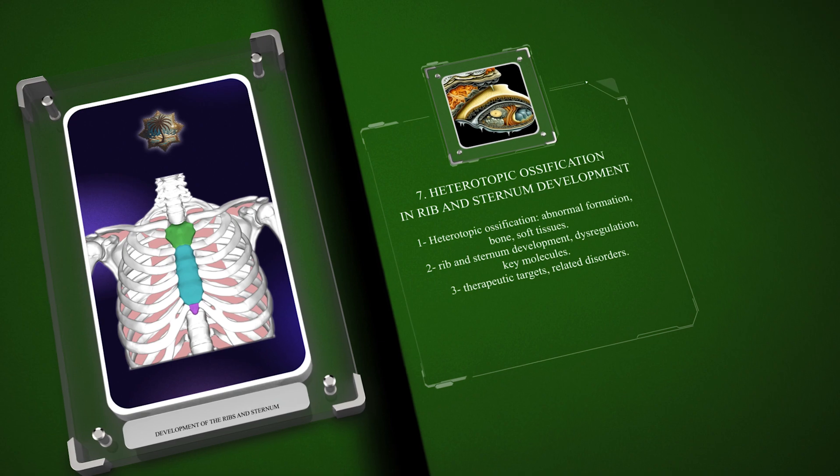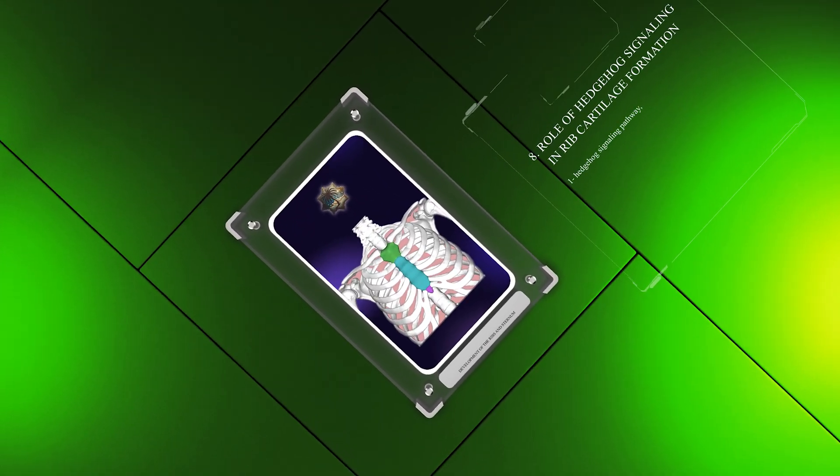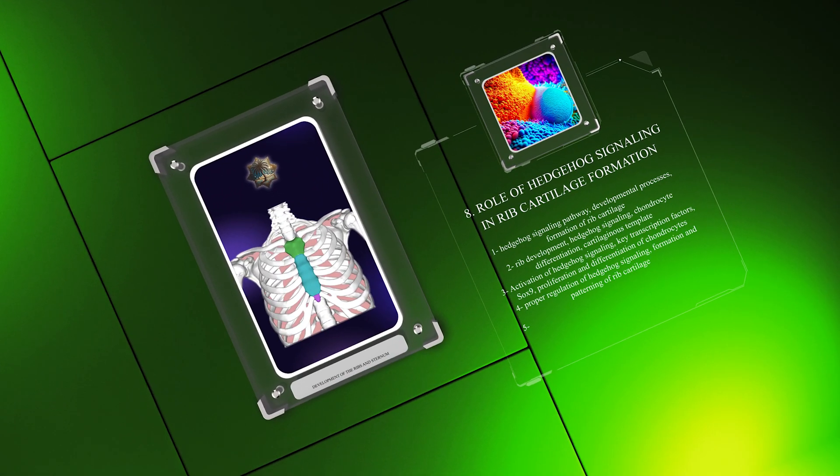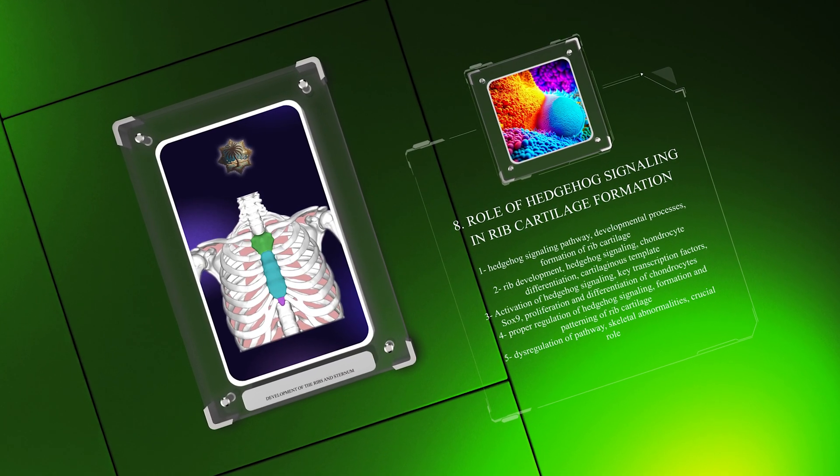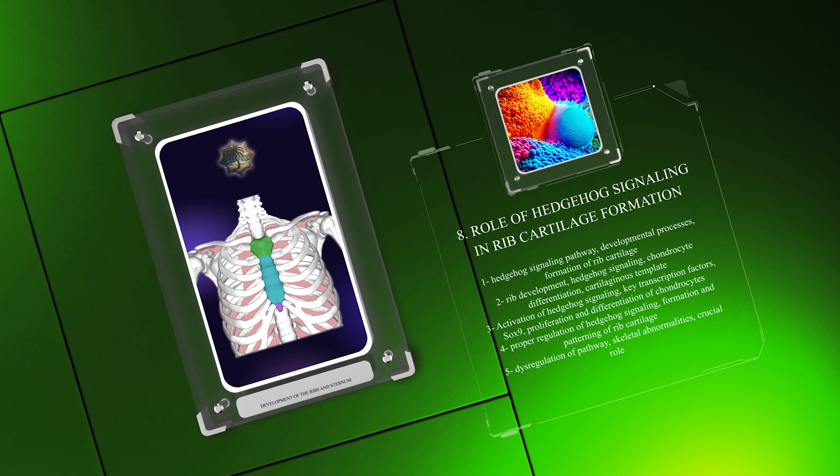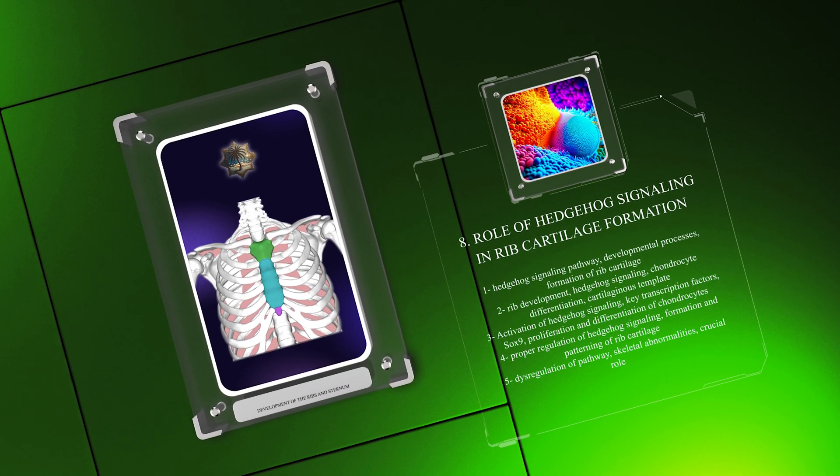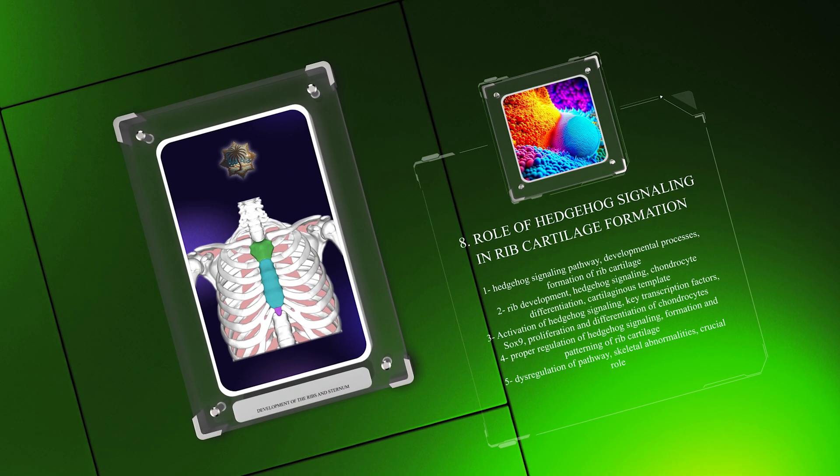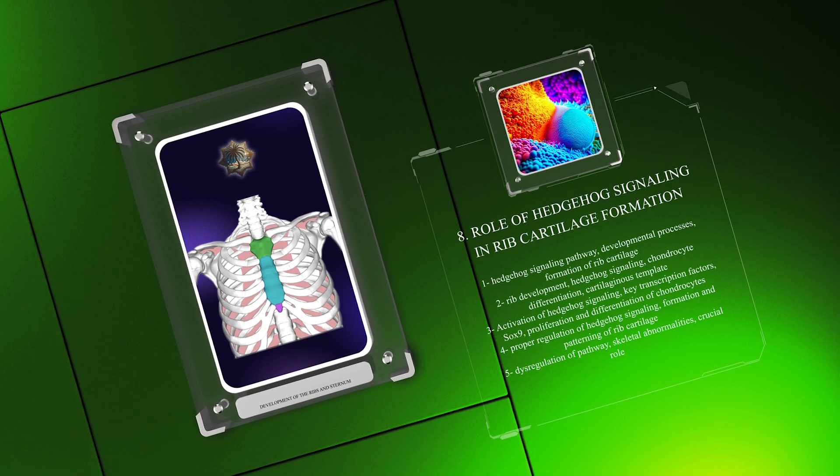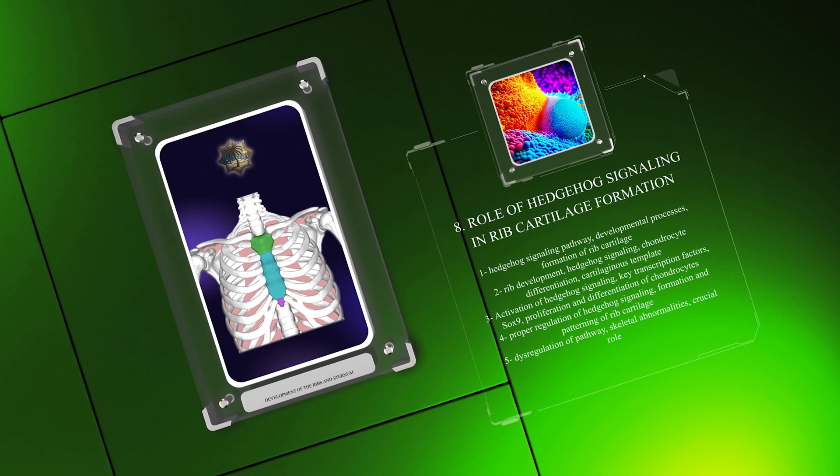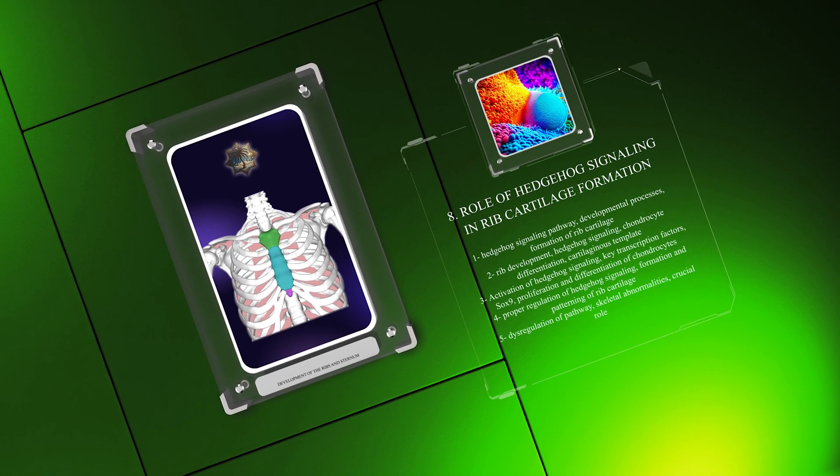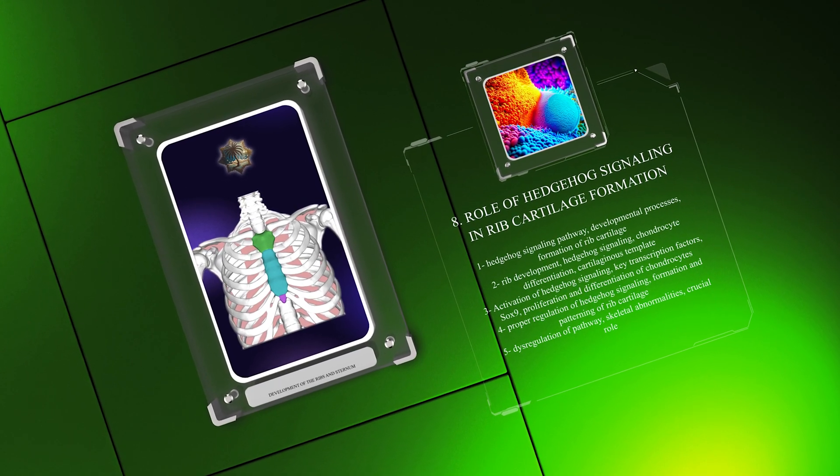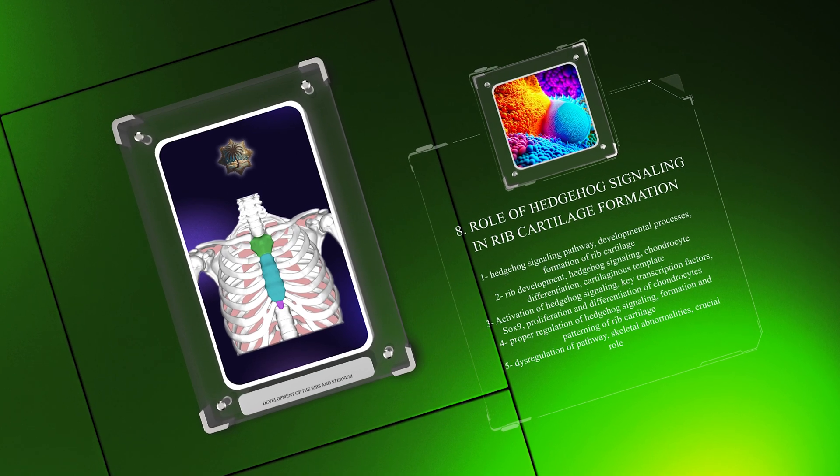The Hedgehog signaling pathway is essential for various developmental processes, including the formation of rib cartilage. During rib development, Hedgehog signaling plays a critical role in chondrocyte differentiation and the establishment of the cartilaginous template. Activation of Hedgehog signaling leads to the expression of key transcription factors, such as Sox9, which regulate the proliferation and differentiation of chondrocytes. Proper regulation of Hedgehog signaling is vital for the correct formation and patterning of rib cartilage. Dysregulation of this pathway can result in skeletal abnormalities.